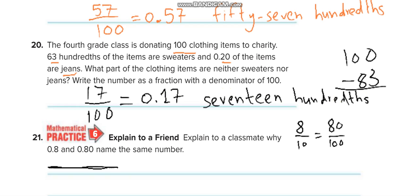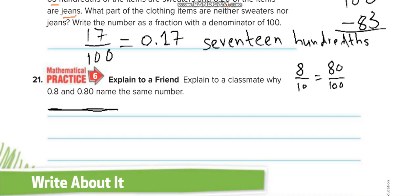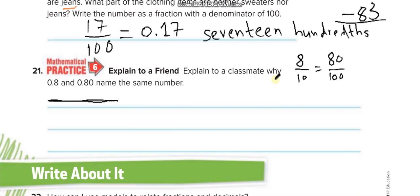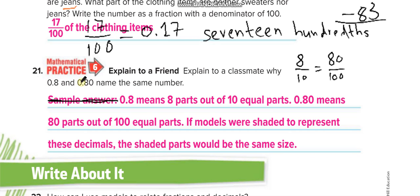Explain to a classmate why 0.8 and 0.80 name the same number. Here you can see their fractions, and if you see their place values, you have 8 tenths here, 8 tenths here, no hundredths, no hundredths. So they both are actually 8 tenths. And 1 tenth is equal to 10 hundredths, so 8 tenths equals 80 hundredths.